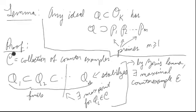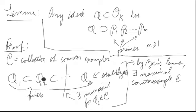If we take any chain in C, eventually that chain in OK itself stabilizes. Once you hit a place where it's out of C, it stays out of C because it would contain the same product of primes. So there will be a maximal point in the chain where we're still in C, meaning all chains in C have an upper bound in C. By Zorn's lemma, there exists a maximal counterexample — call it E.